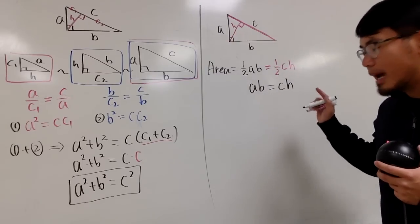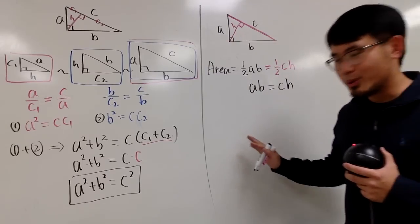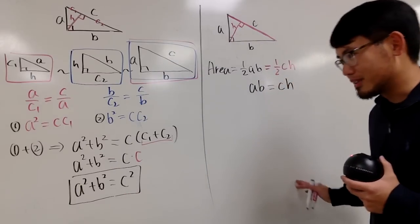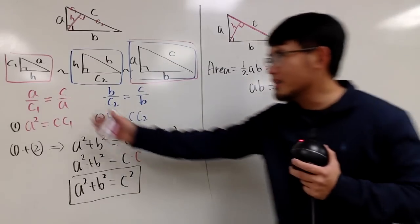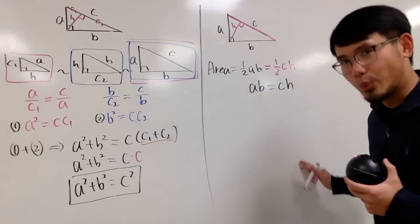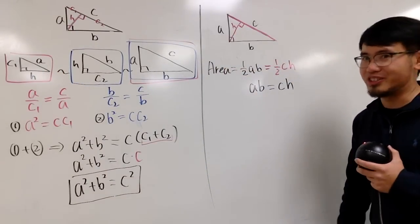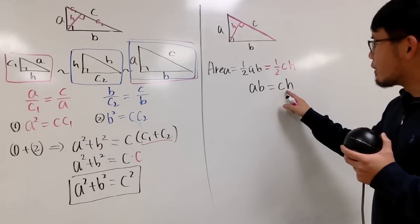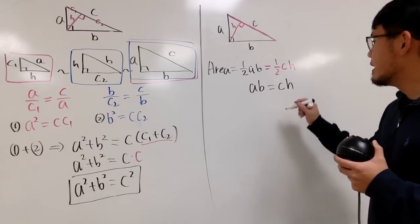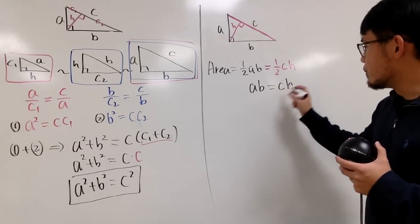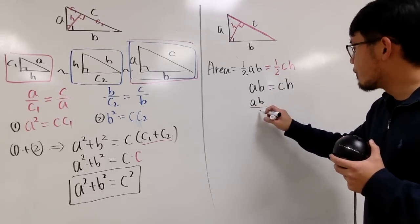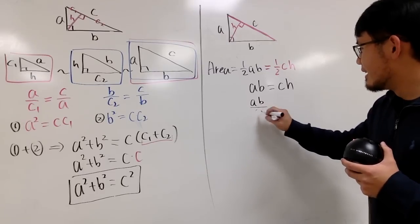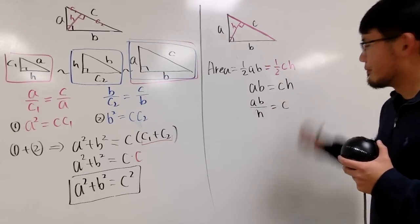We can multiply both sides by two, so the 1 half will be gone, and we get ab equals ch. This time, I don't want to end up with any c's. Earlier we had c; this time we don't. Earlier I didn't involve h; this time we will. So to do that, I'm going to divide both sides by h, and you get ab over h equals c.